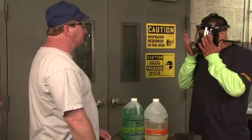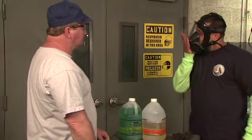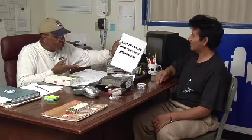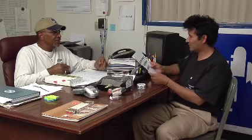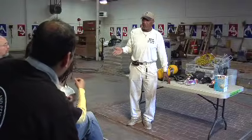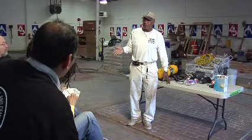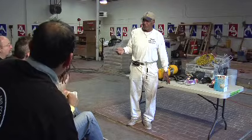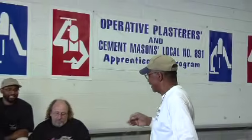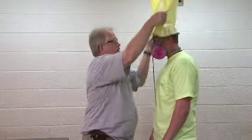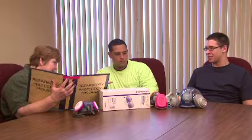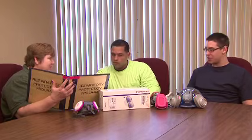Evaluate workers' use of respirators and correct any problems. And provide you with access to specific records and documents, such as a written copy of your employer's respiratory protection program. Some of these requirements, such as training and fit testing, can be provided by an outside party, including a union, an apprenticeship program, a contractor's association, or a past employer, provided they were conducted within the last 12 months. However, it is still your current employer's responsibility to ensure that all of the requirements of the standard have been met.